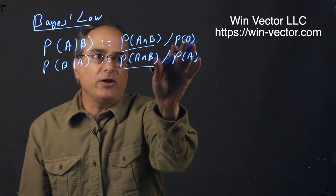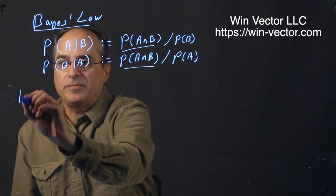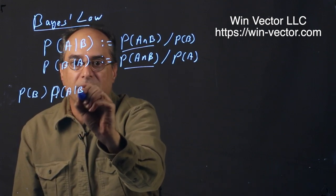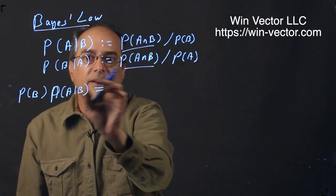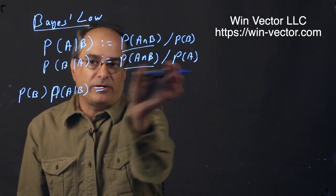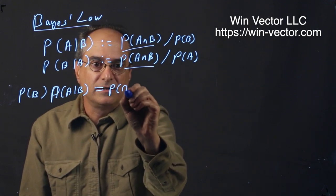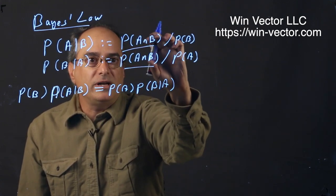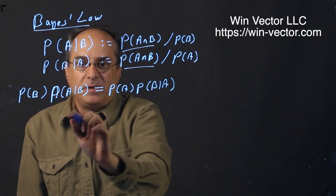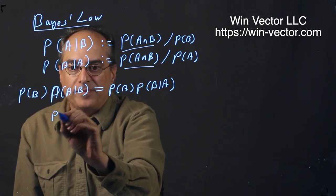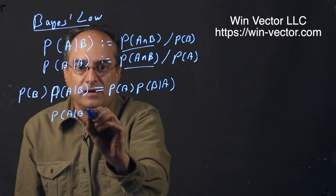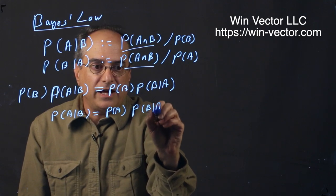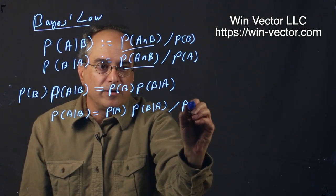For the top equation, we multiply both sides through by P(B), giving us P(B) P(A given B) equals this term here. We can do the same for the second equation. We multiply through by P(A). So P(A) times P(B given A). We know these two are equal because they're each equal to this shared term here. Now we divide out P(B) to get our final form. P(A given B) is equal to P(A) P(B given A) over P(B).